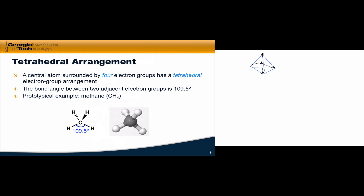If we look at the tetrahedral arrangement from a certain angle, two bonds highlighted in red are in the plane, the bond highlighted in blue is coming out towards us, and the bond highlighted in black is going away from us. Translating this into a typical chemical structure: the two red bonds are drawn as straight lines in the plane, the blue bond is on a wedge coming out towards us, and the black bond is on a dash going away from us. Critically, the dashed bond and the wedge bond are drawn on the same side of the in-plane bonds — this is a common mistake students make when drawing tetrahedral carbons in organic chemistry.